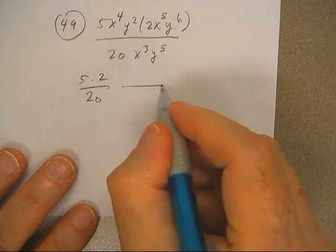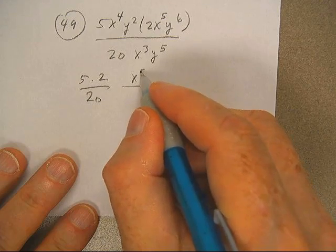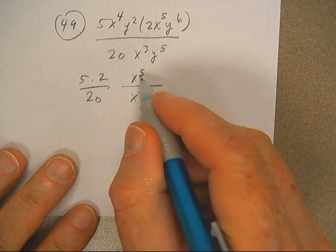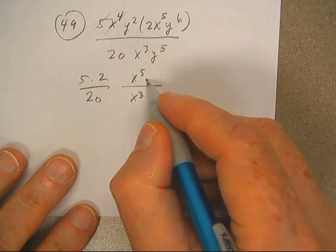Let's do these variables. I've only got x to the fifth up there, and I got x cubed down here. That takes the, ooh, there's an x to the fourth. Missed that.